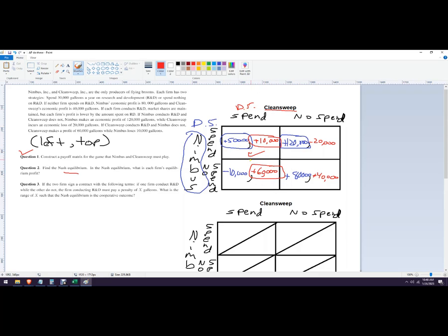So this is the Nash equilibrium right here. And that is both spent. So this is both. Both firms' profit is going to be, you would just say Nimbus is going to make 50,000 and Clean Sweep makes 10,000. And you would say, the way you'd phrase this, you'd say both would spend.